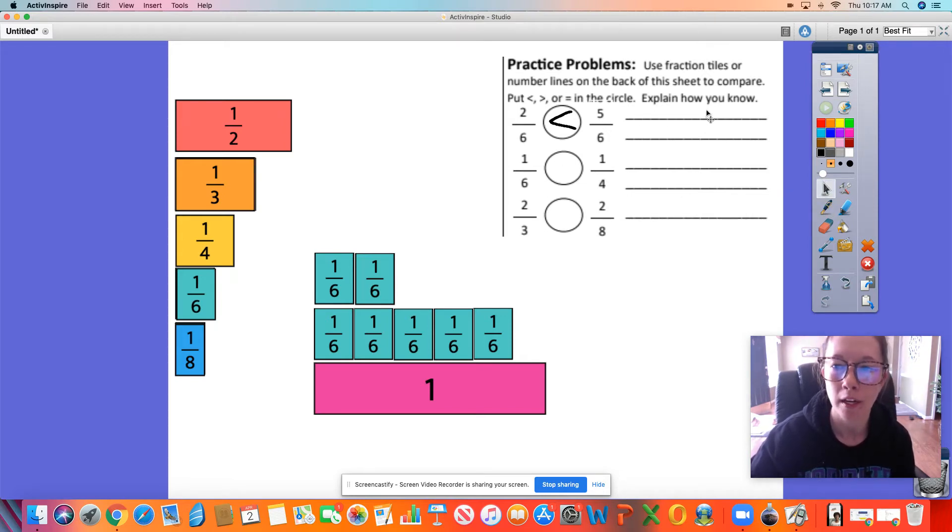How do I know? I know because 2 out of 6 parts is less than 5 out of 6 parts, and I have my visual model right here that shows that.